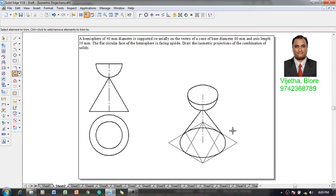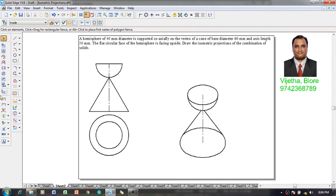Let me trim off these portions that are not going to be visible. The construction lines, if required, we can retain, otherwise they can be eliminated. Using the trim command, I am going to trim out the unwanted portions. Now the isometric drawing has been completed. It has to be converted to isometric scale.